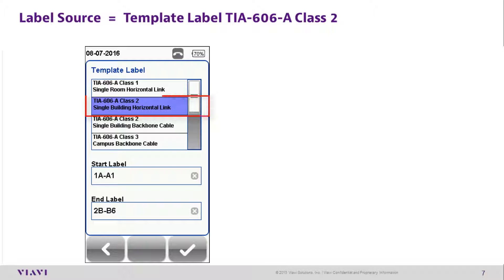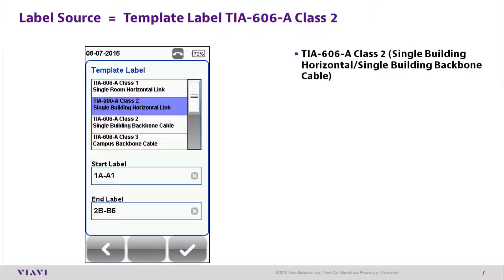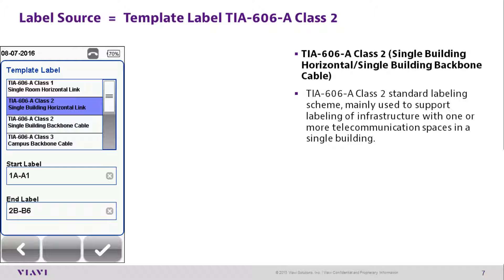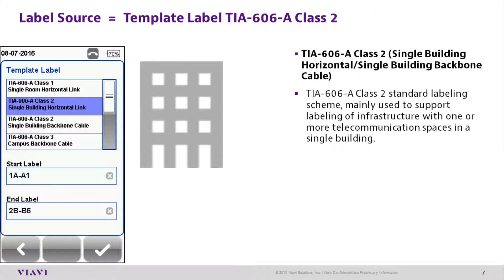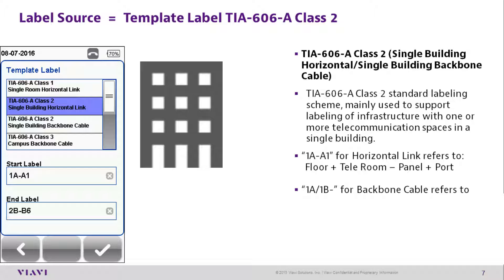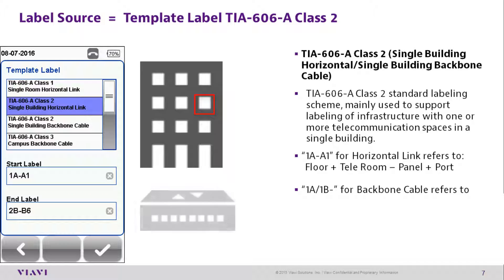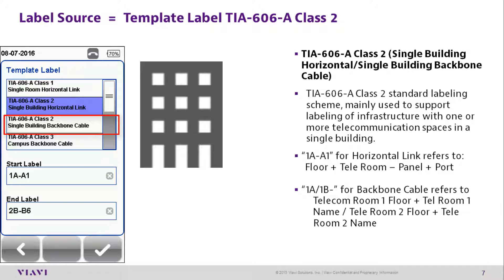Template Label TIA606 Alpha Class 2 covers Single Building Horizontal and Single Building Backbone Cable. This standard labeling scheme is mainly used to support labeling of infrastructure with one or more telecommunication spaces in a single building. 1-Alpha-dash-Alpha-1 for horizontal links refers to the floor, the name of the first telecommunications room, the panel, and the port.